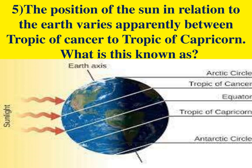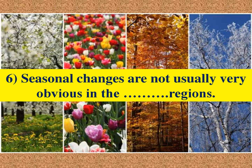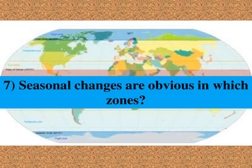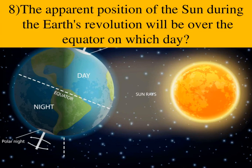The position of the Sun in relation to the Earth varies apparently between the Tropic of Cancer and the Tropic of Capricorn — what is this known as? Answer: Apparent movement of the Sun. Seasonal changes are not usually very obvious in the tropical regions. Seasonal changes are obvious in which zones? Answer: In the mid-latitude temperate zones.